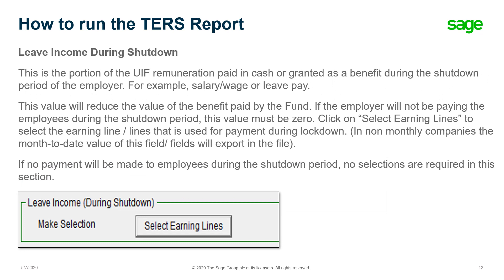Your leave income during the shutdown period is the portion of the UIF remuneration paid in cash or granted as a benefit during the shutdown period — for example, salary, wage or leave pay. This value will reduce the value of the benefit paid by the fund. If the employer will not be paying employees during the shutdown period, this value must be zero. Click on select earning lines to select the earning line or lines used for the payment during lockdown. In non-monthly companies, the month-to-date value of these fields will export to the file. If no payment will be made, no selections are required in this section.